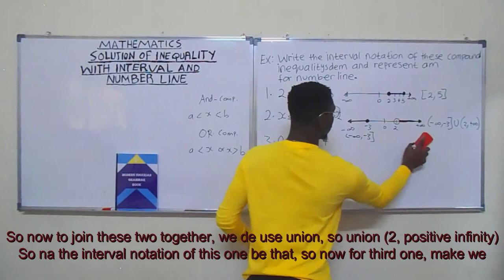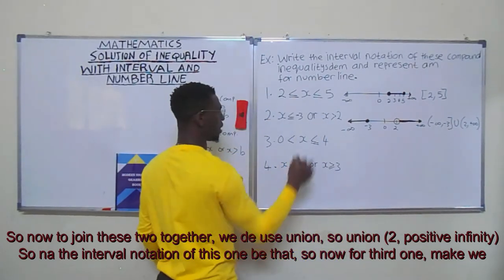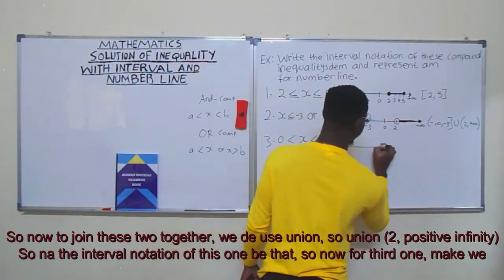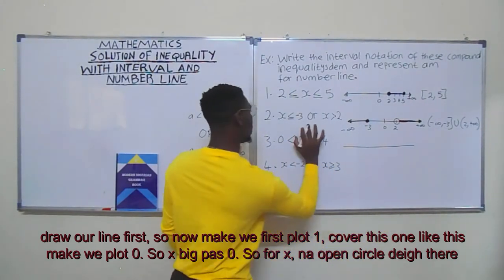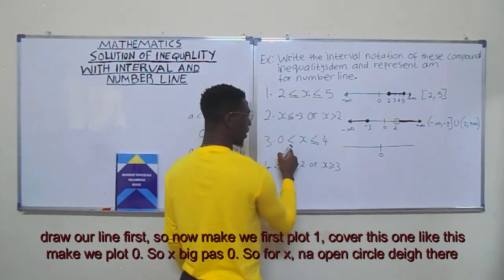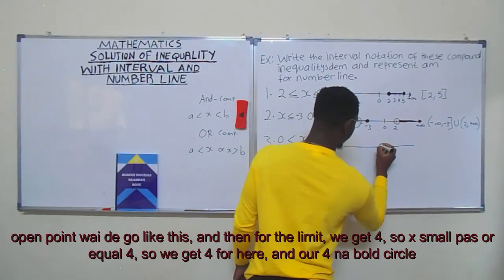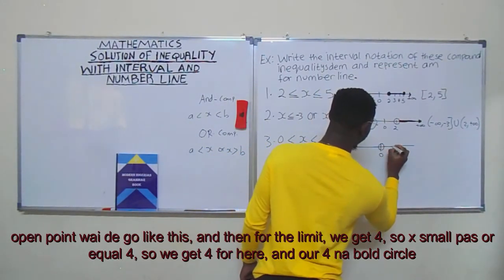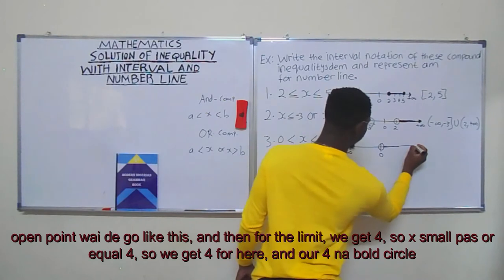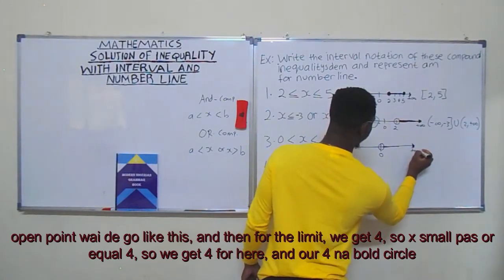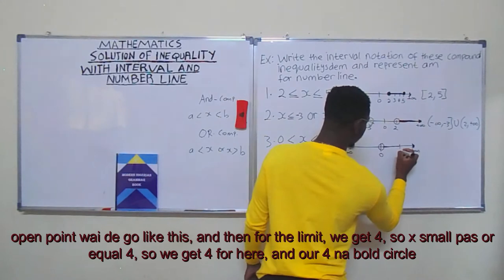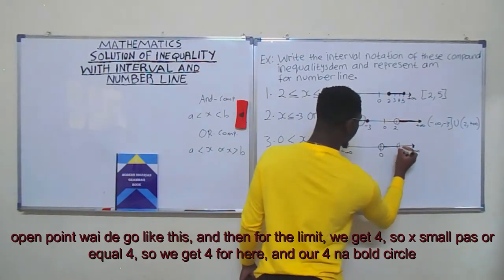For the third one, we draw our number line. We plot zero and one. For x greater than zero, we use an open circle since it is an open point. For the upper limit, x is less than or equal to four, so we plot four with a closed circle.